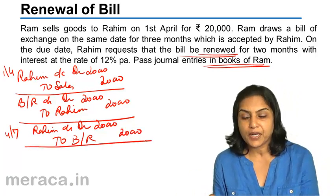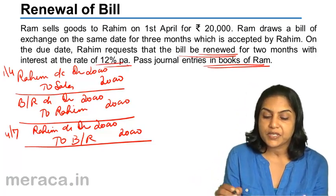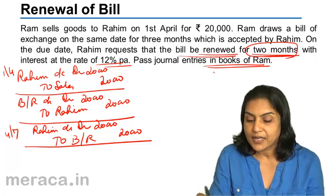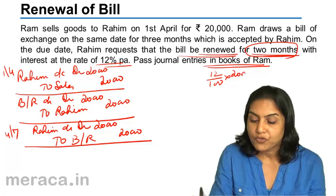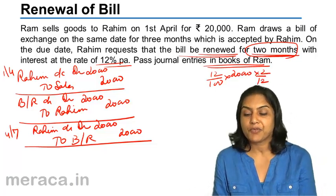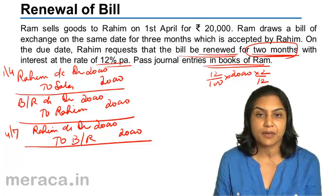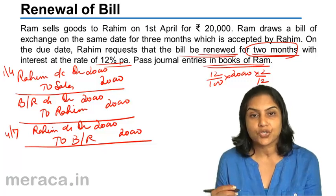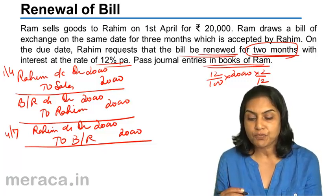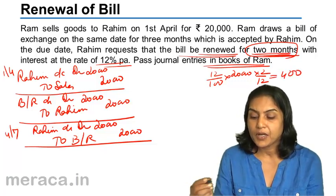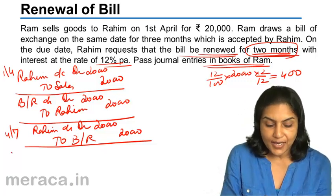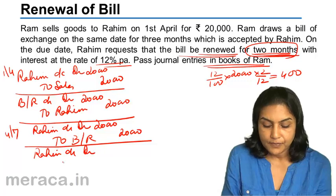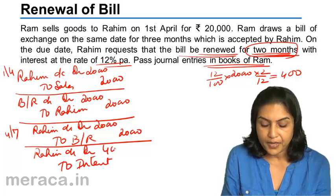Before we create the new bill, let us pass the entry for interest. Interest is 12% per annum and since it is renewed for two months, we consider two months' interest. The interest is 12% of 20,000 for two months. A simple way of calculation: if it's 12% per annum, that is 1% per month. 1% of 20,000 is 200, therefore 200 for each month; for two months it will be 400. The entry for interest — interest is an income to be paid by Rahim to Ram — so Rahim's account debit to interest, amount 400.